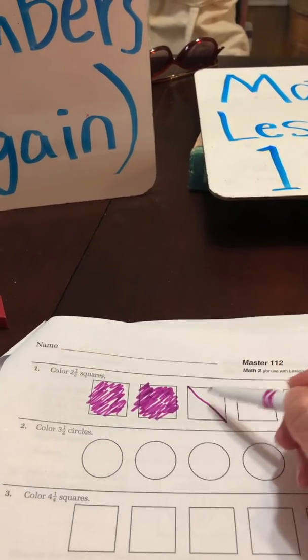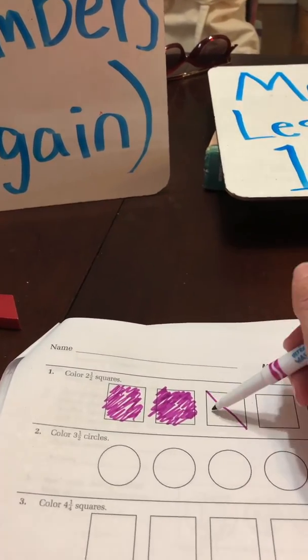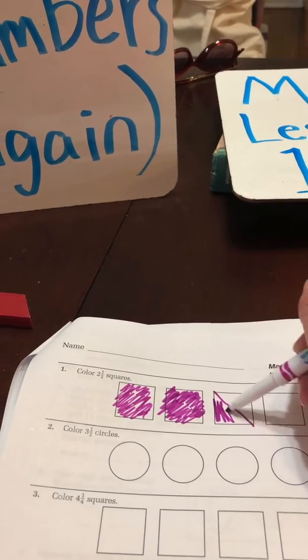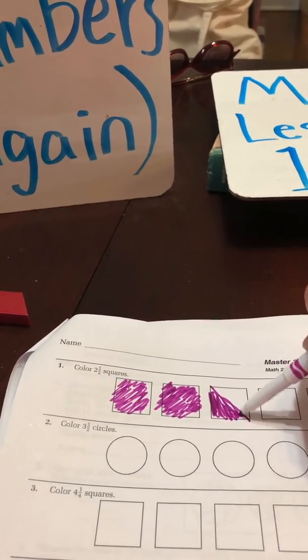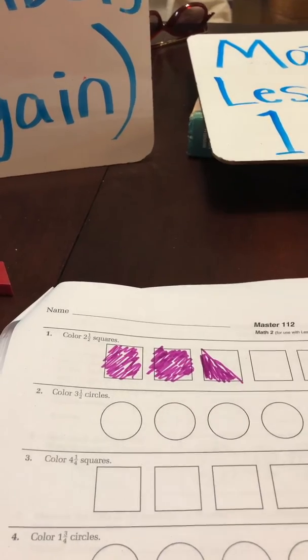So I've drawn, I've divided my square in half. I can color either side. Perfecto, two and a half.